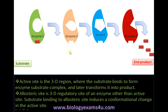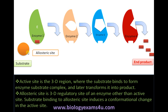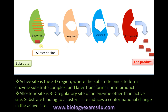This end product will bind to the allosteric site of enzyme 1. As discussed, the allosteric site is a site other than the active site. Binding of this end product to the allosteric site causes a conformational change at the active site. So now if the substrate tries to bind to enzyme 1, the active site has changed due to that binding, and further production of product A is blocked.